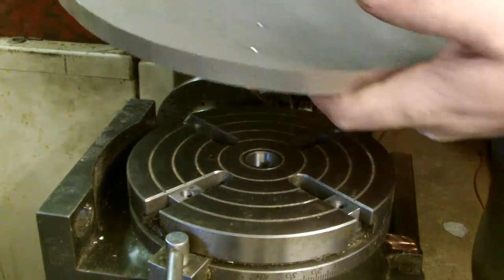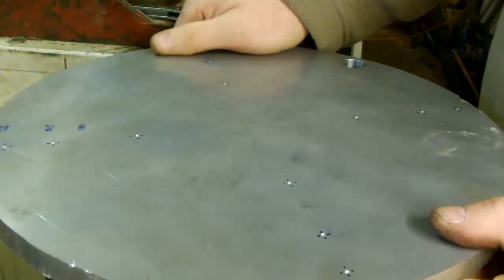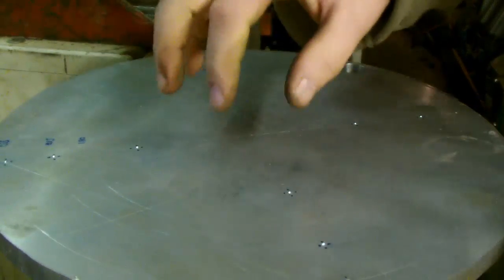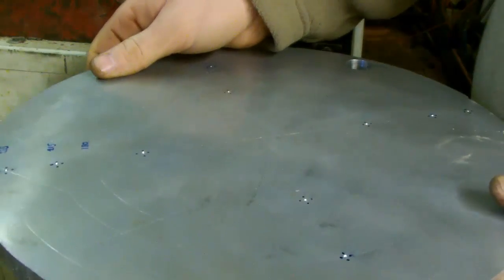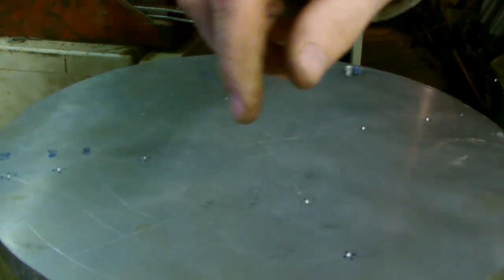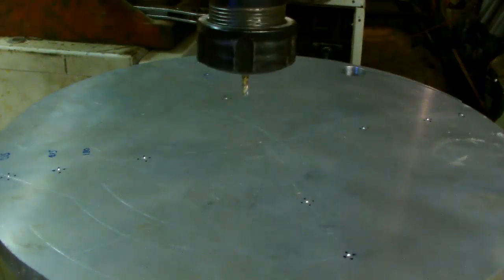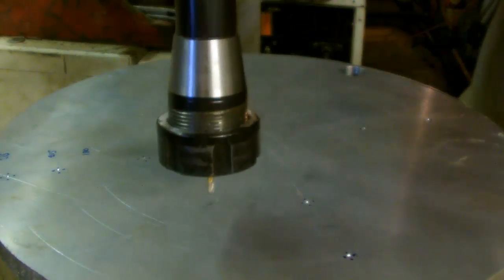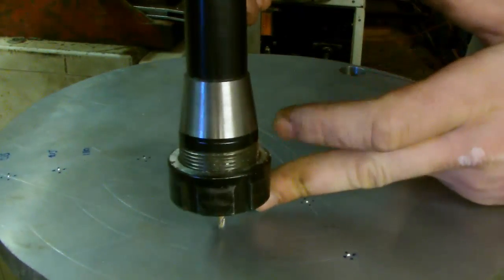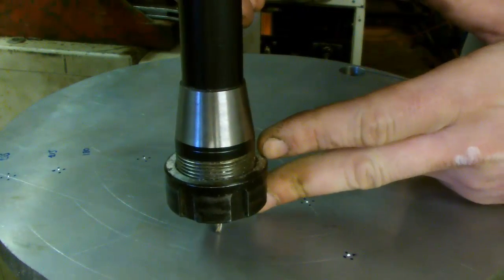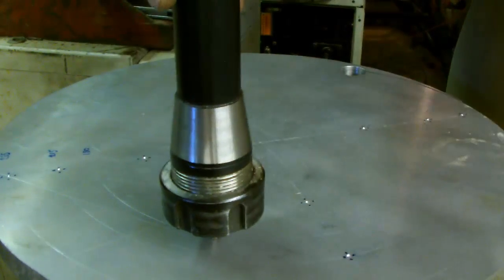So once we get this plate centered somehow on here, on the rotary table, we can then move the milling cutter into position. As long as we have the milling cutter on the line, or just inside that line, or should I say just outside it.